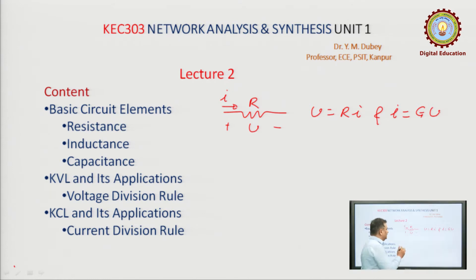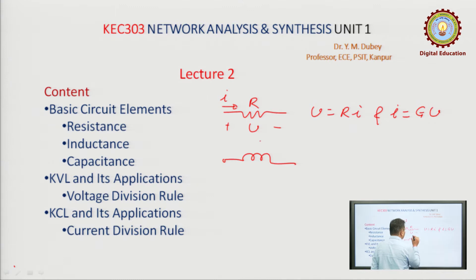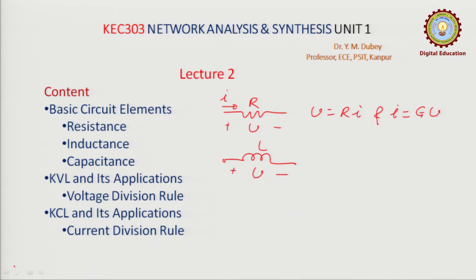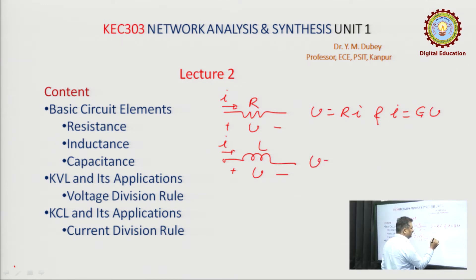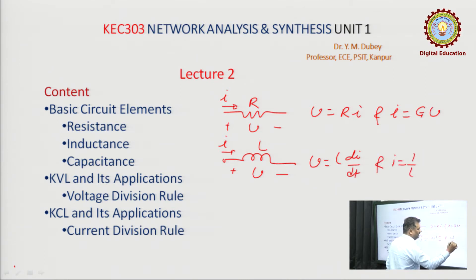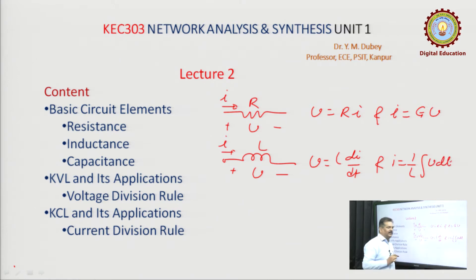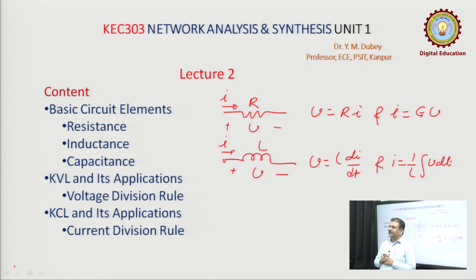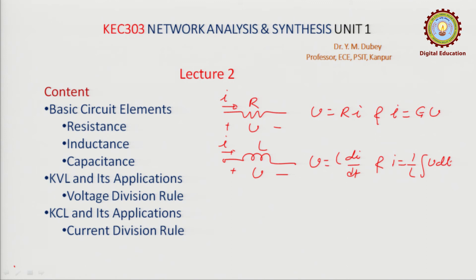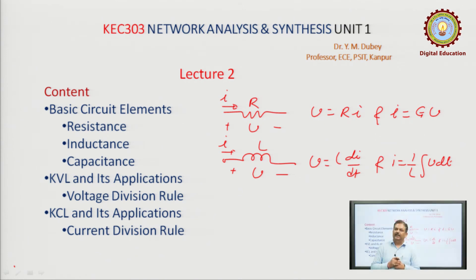The second element was the inductor. V is the difference of voltage between the terminals, I is the current. Voltage and current are related by V equals L di/dt, and I equals (1/L) times the integral of V dt. Inductor is an energy storing element — it stores magnetic energy, and the magnetic energy stored is given by (1/2)LI².